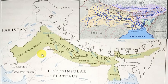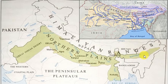The Northern Plains are divided into three parts: the first is the Rajasthan Plain, the second is the Ganga Basin, and the third is the Brahmaputra Valley. The Rajasthan Plain is also known as the Great Indian Desert, and the Brahmaputra Valley is also known as the Assam Plain.